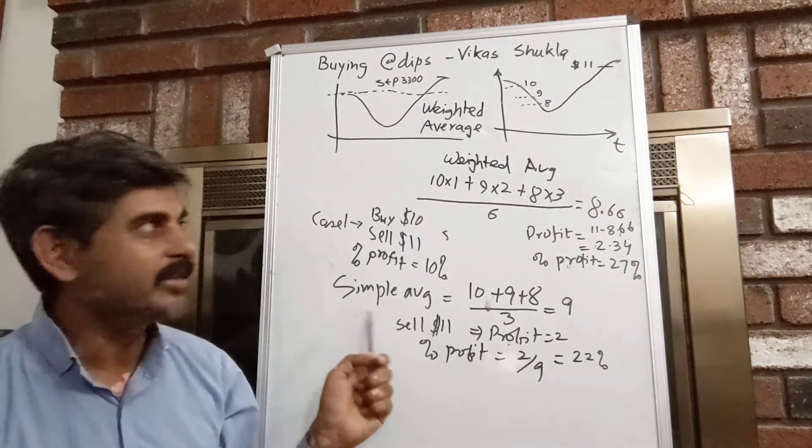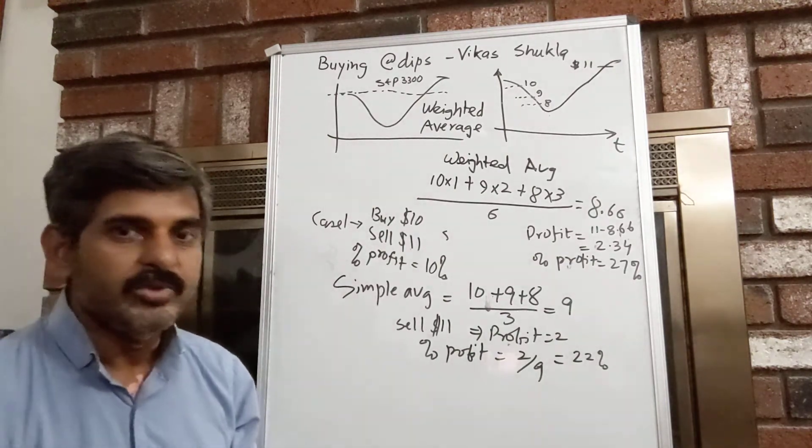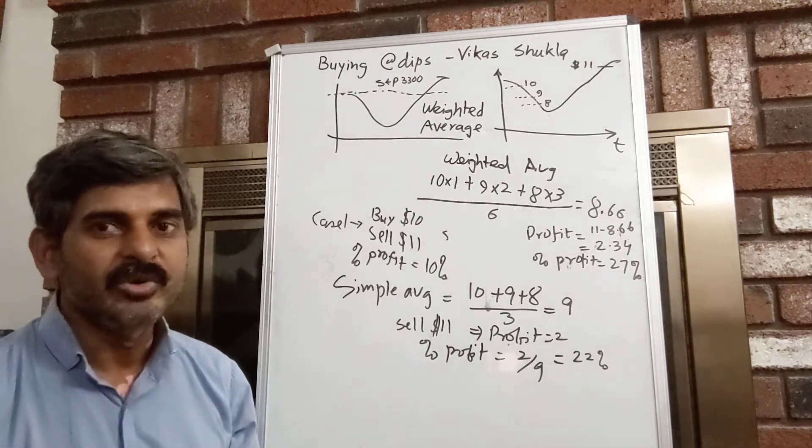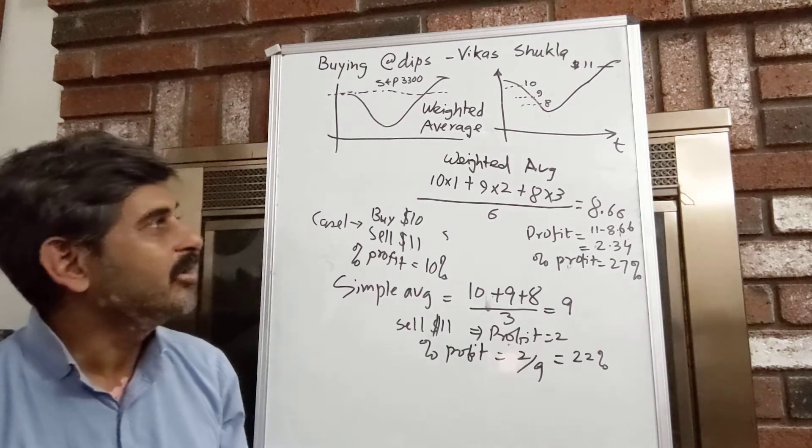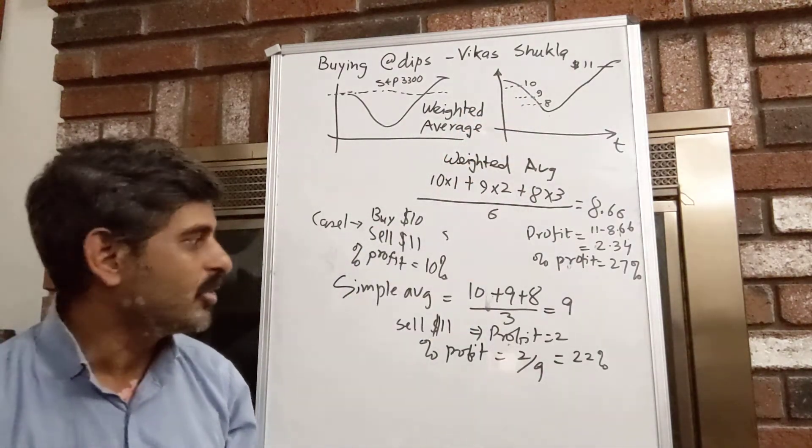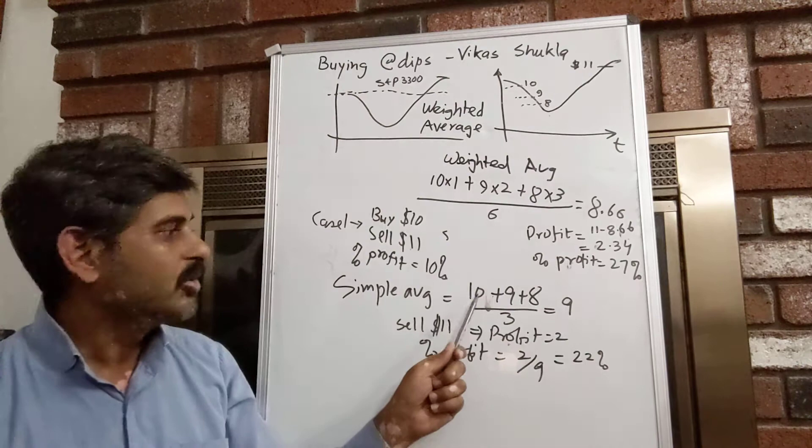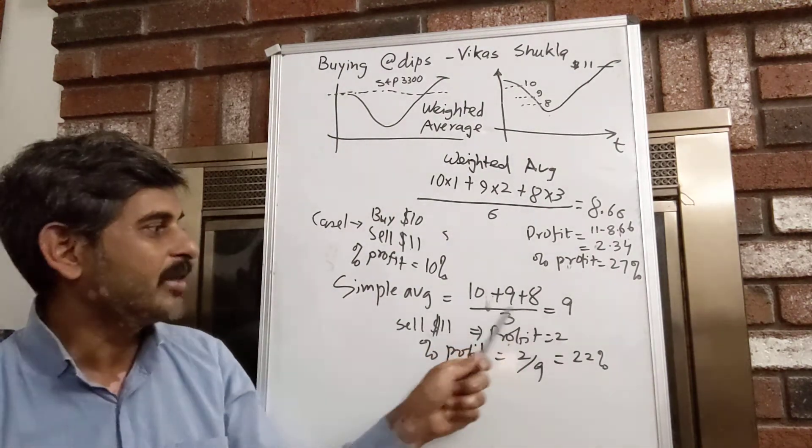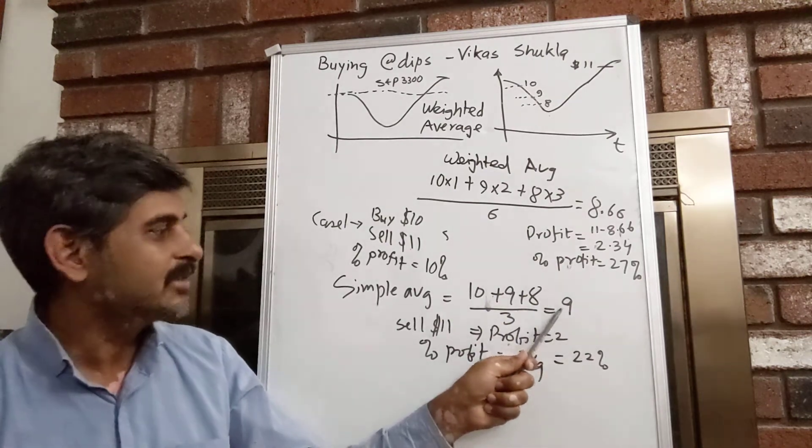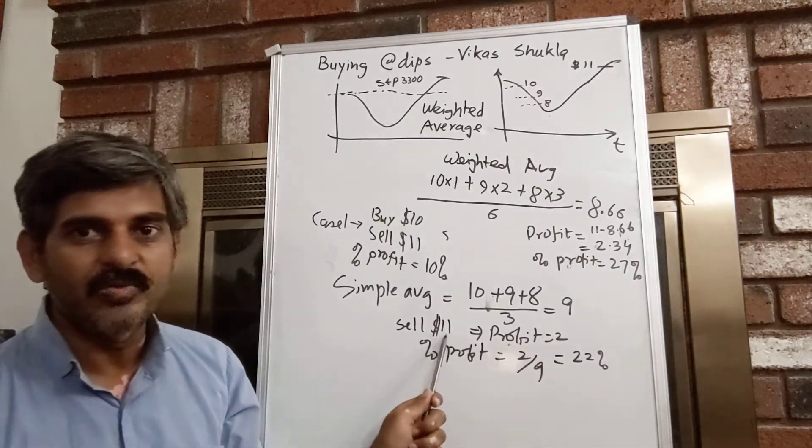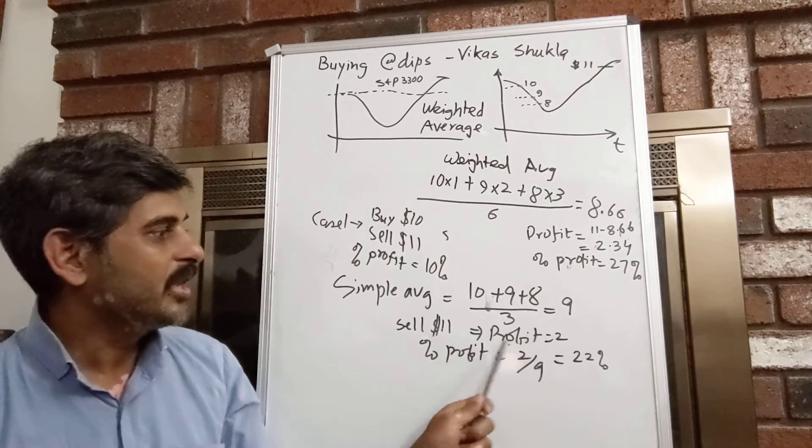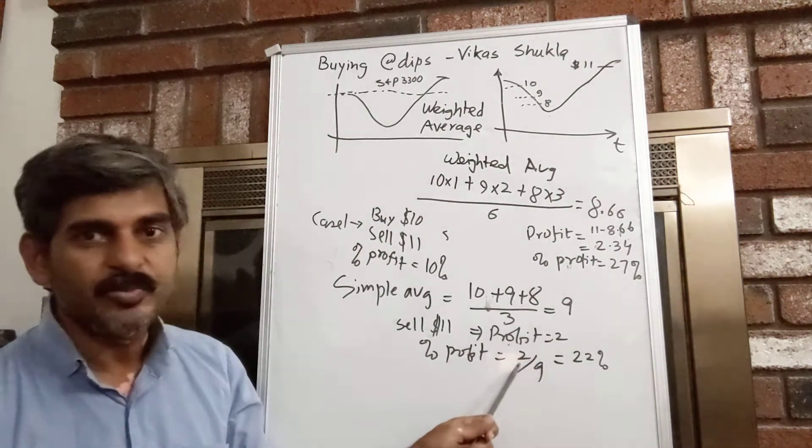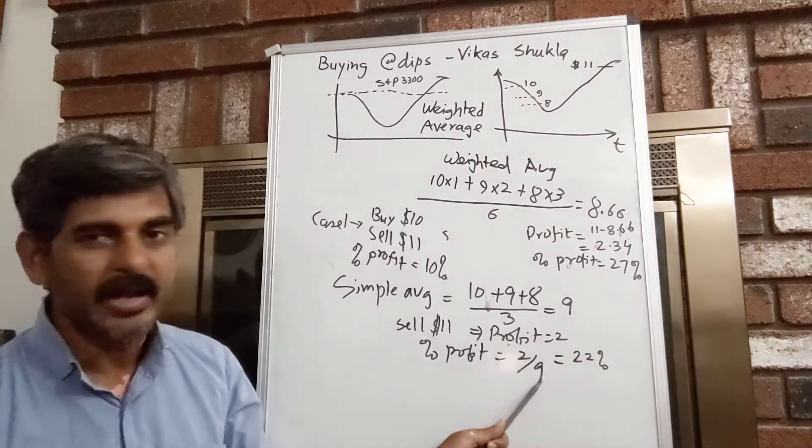Or, we could do a simple averaging, which is probably maybe the case when you do not have that much of money available with you in reserve when the stock price is going down. Then, your average buying price is 10 plus 9 plus 8 divided by 3 or $9. In that case, let's say you sell it when it goes back to $11, you make a profit of $2.